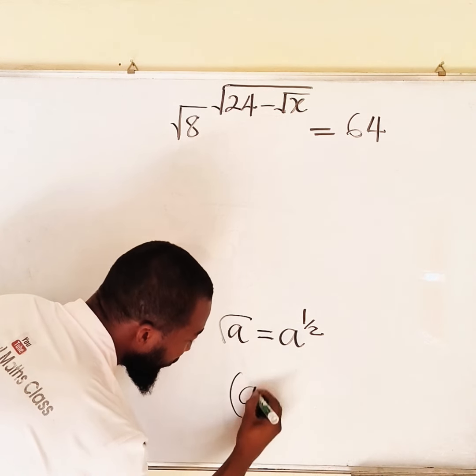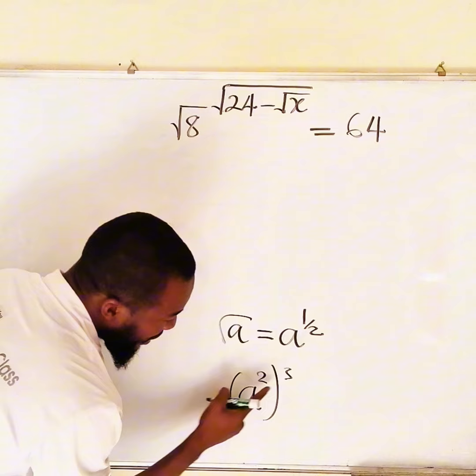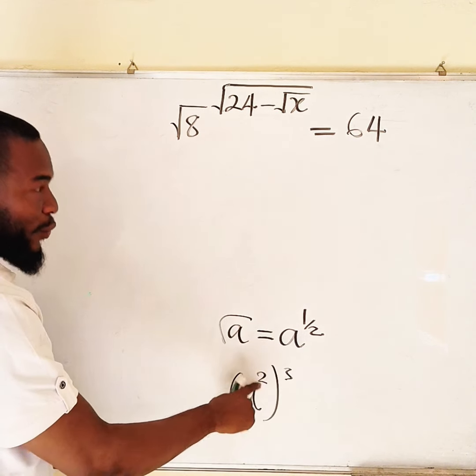For instance, if you have 8 raised to the power of 2 raised to the power of 3, this exponent and this will multiply.